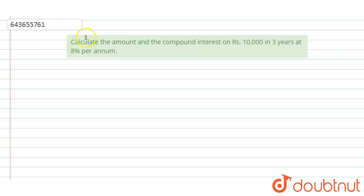Hi, welcome to this video. The question is: calculate the amount and the compound interest on Rs. 10,000 in three years at 8% per annum.